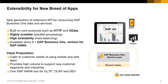So what is the Service Layer? Service Layer is the new extensibility API for consuming SAP Business One data and services. It is based on core protocols such as HTTP and OData. It is highly scalable, designed with parallel processing, and highly available, implementing load balancing. Service Layer is available since SAP Business One 9.1 version for SAP HANA release. The goal of the Service Layer is to ease the development of mobile and web applications connecting to SAP Business One data and services, provide high volume support for new customer segments and industries, and as it runs on top of SAP HANA, developers can take advantage of a single box for transactional and analytic operations, as well as leverage the SAP HANA development environment.